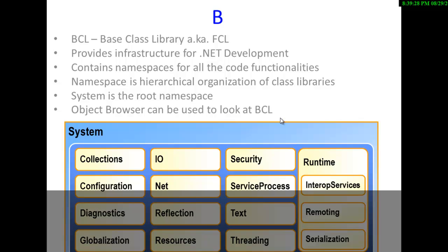System is the root namespace. Everything starts from System and lives inside System. So if you see here, it has Collections, Input, Output, Security, Configuration, Net, Services, Processes, Diagnostics and many more like that. Now this is just a theory and a pictorial view of BCL and how it looks.